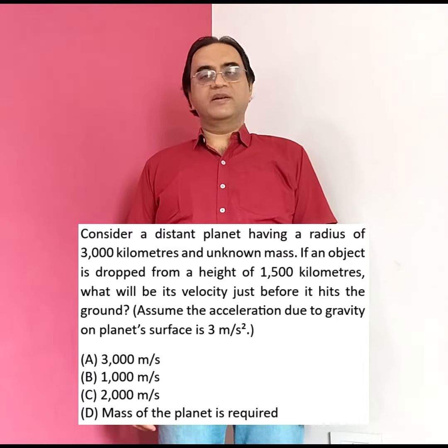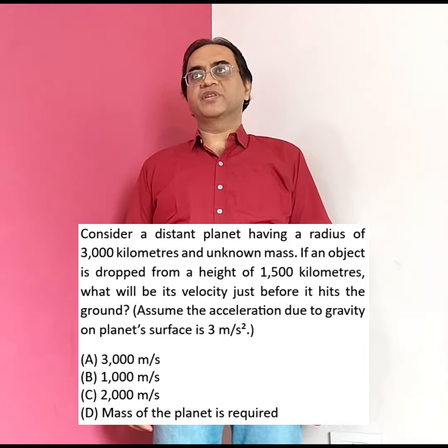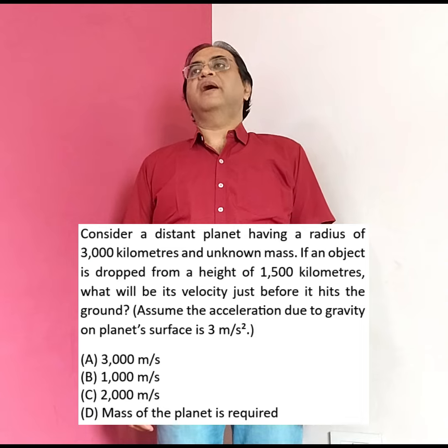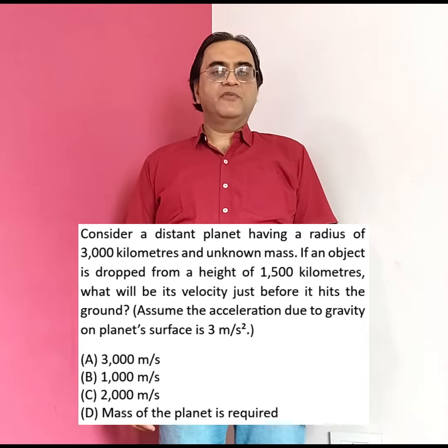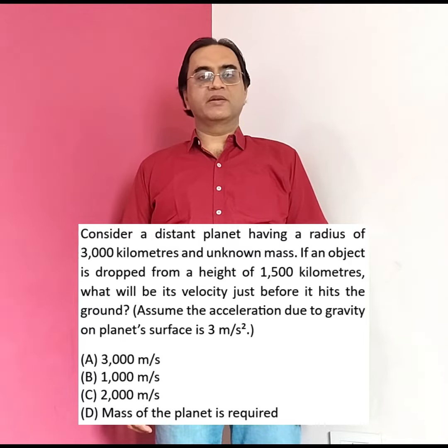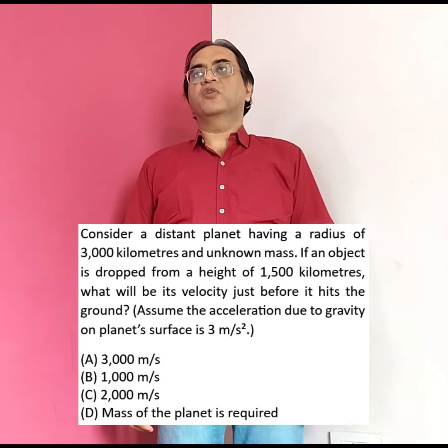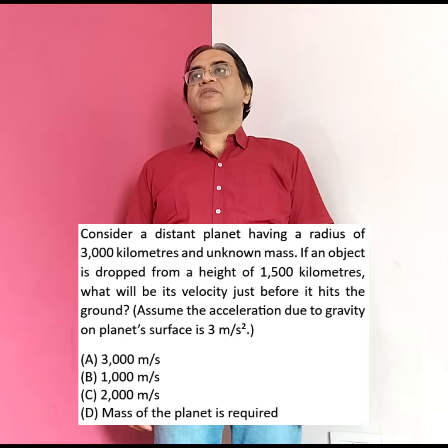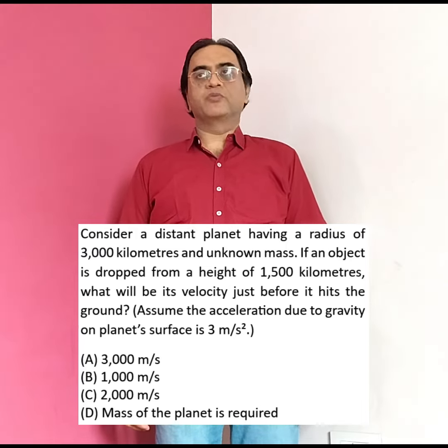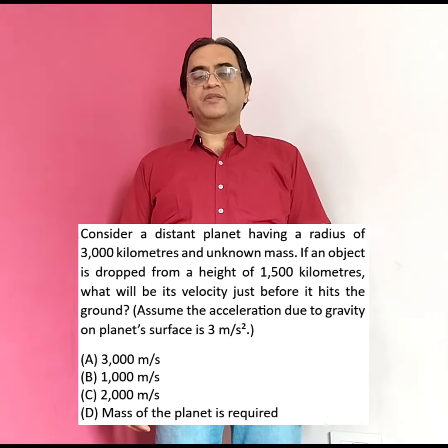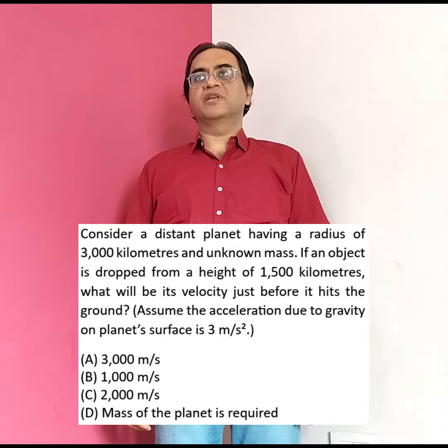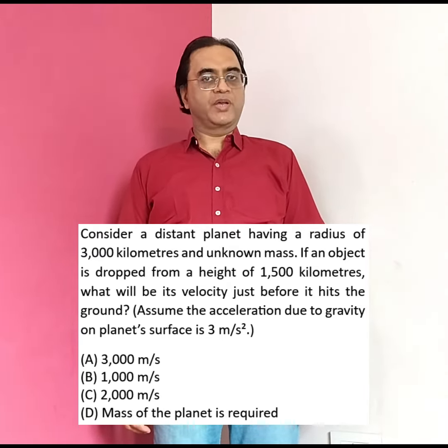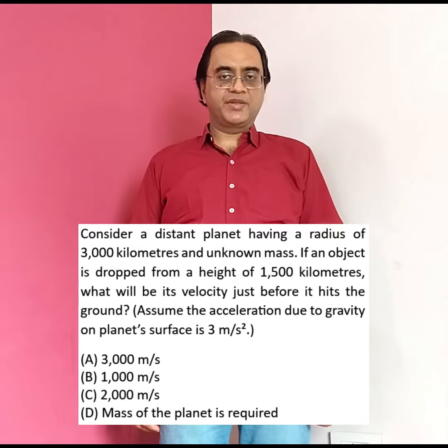Consider a distant planet having a radius of 3,000 kilometers and unknown mass. If an object is dropped from a height of 1,500 kilometers, what will be its velocity just before it hits the ground? Assume the acceleration due to gravity on the planet's surface is 3 meters per second squared. Four options are given.